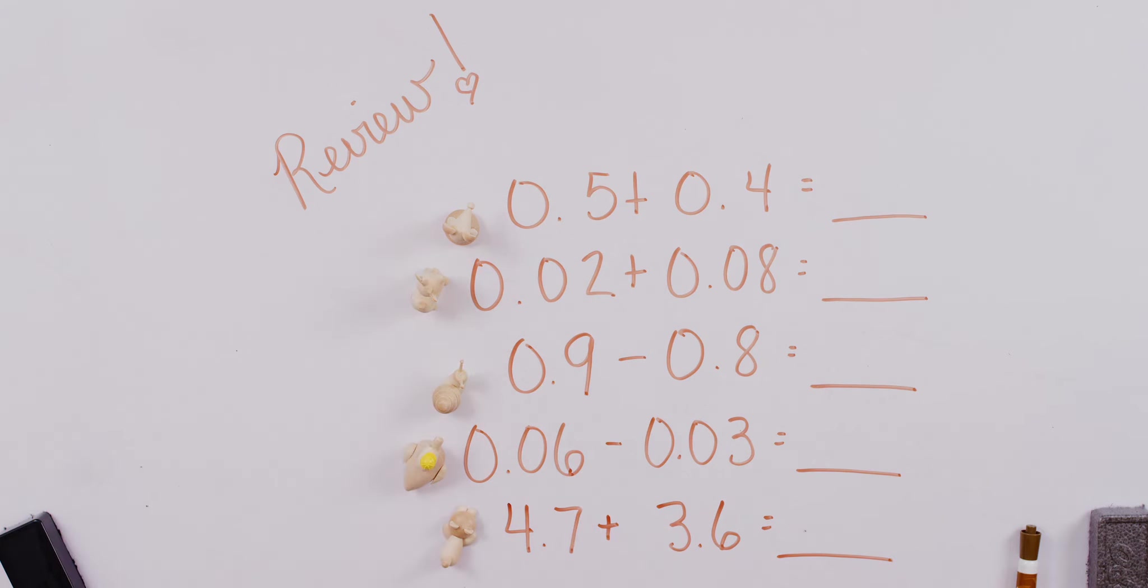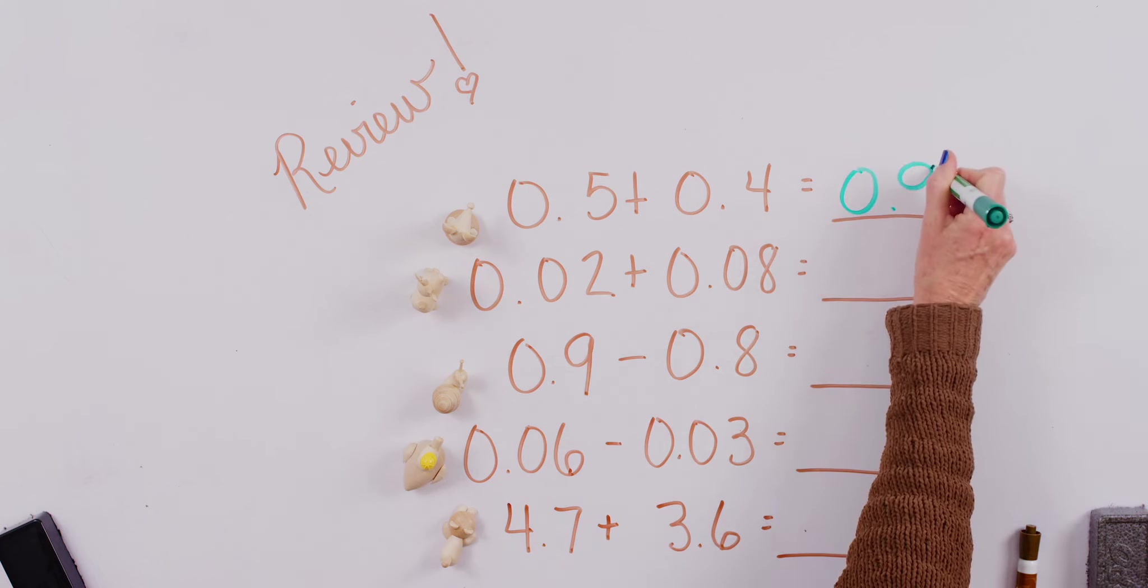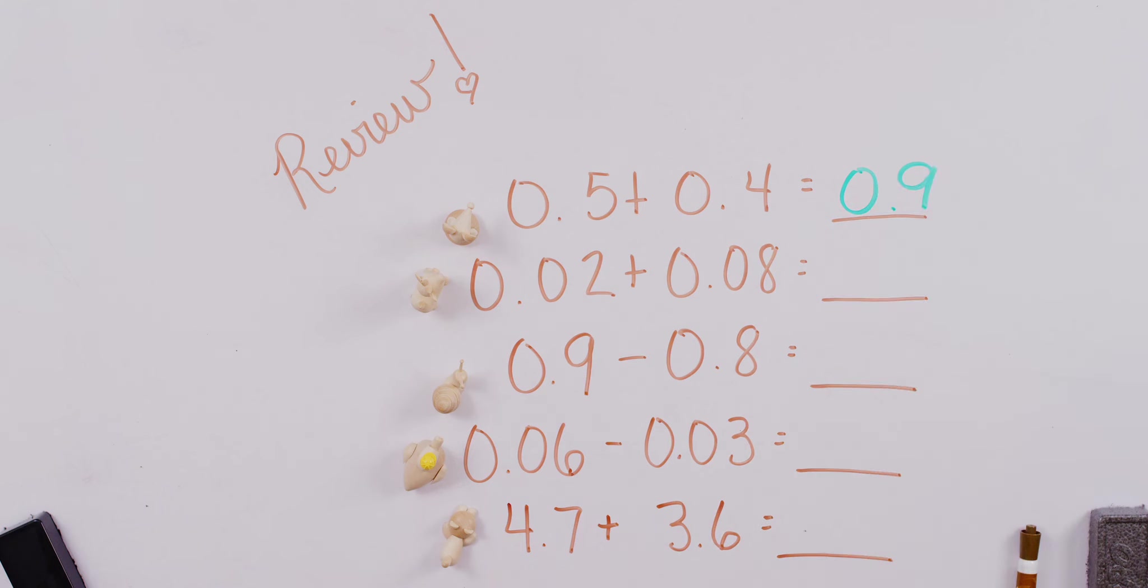We're going to start with mouse first. We have five tenths plus four tenths and that equals... Did you remember that five plus four equals nine? Nine tenths is really close to what number? You got it, it's really close to one whole.